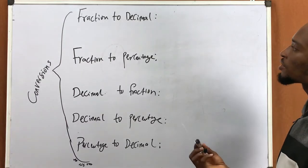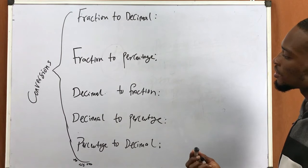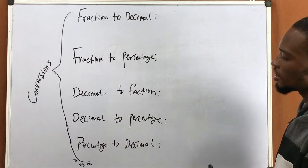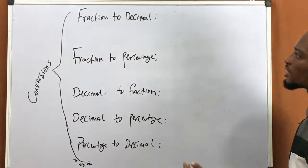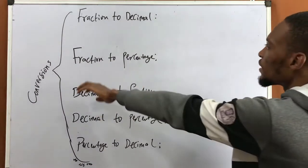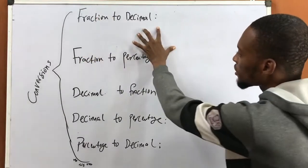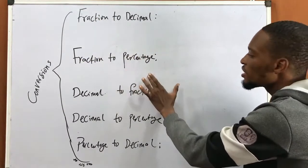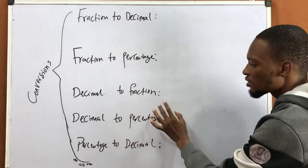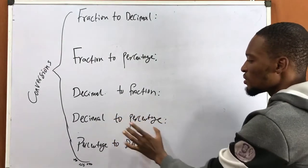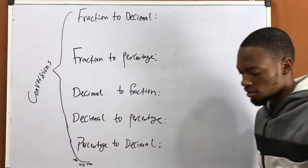We've discussed fractions, we've discussed decimals, and we've discussed percentages. So now let's see how we can convert fraction to decimal, fraction to percentage, decimal to fraction, decimal to percentage, and percentage to decimal.